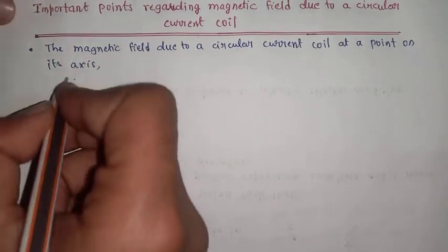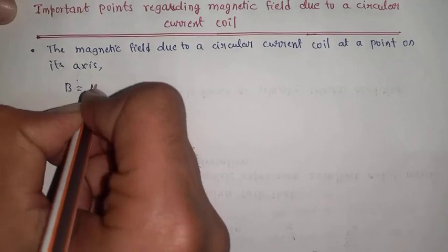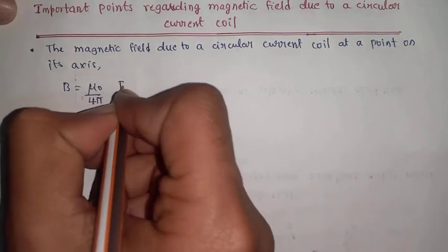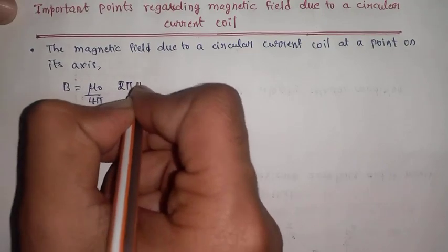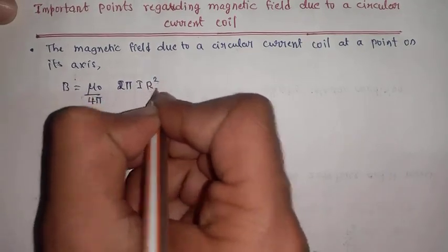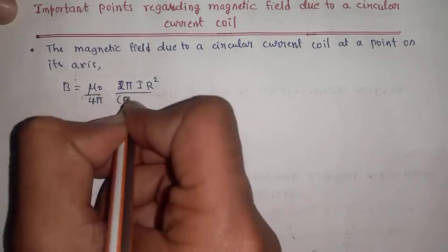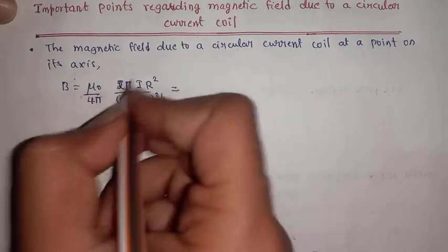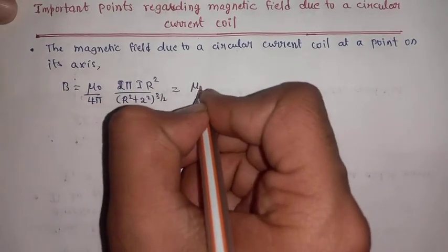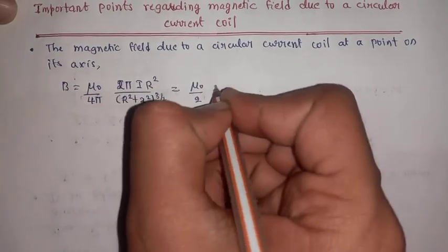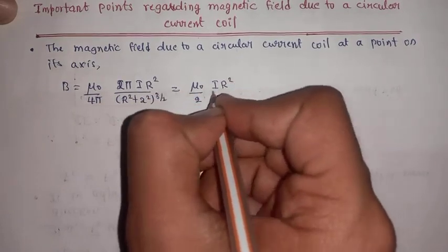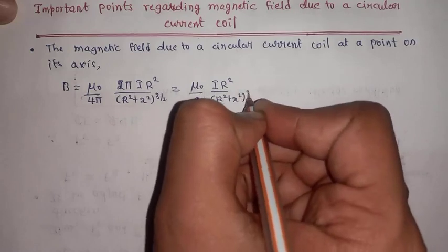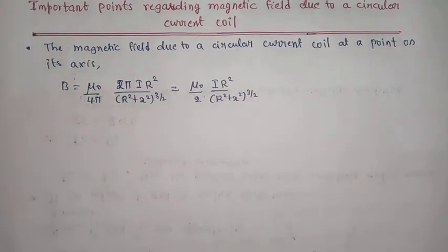The formula is: B equals mu-naught divided by 4-pi, multiplied by 2-pi-i-r-squared divided by (r-squared plus x-squared) to the power 3 by 2. Simplified, this becomes: B equals mu-naught divided by 2, multiplied by i-r-squared divided by (r-squared plus x-squared) to the power 3 by 2.